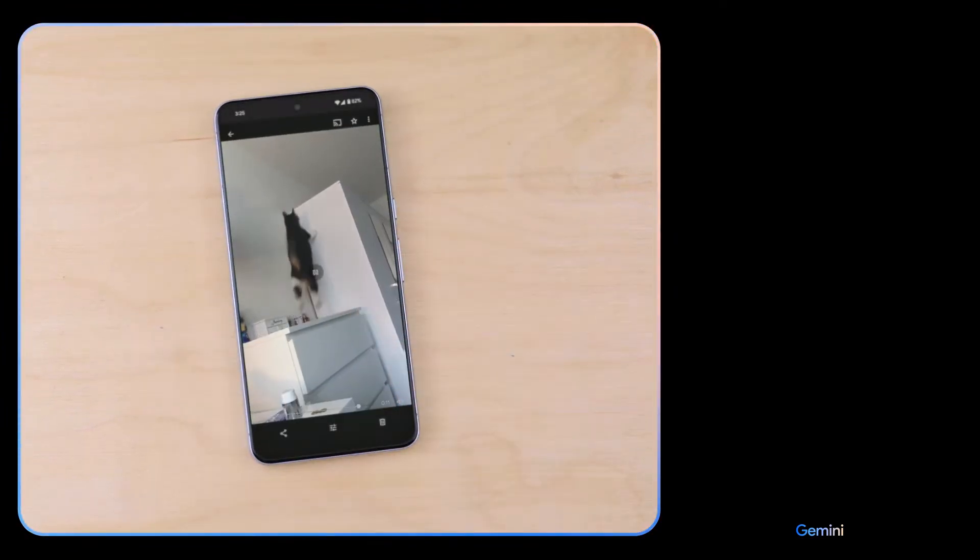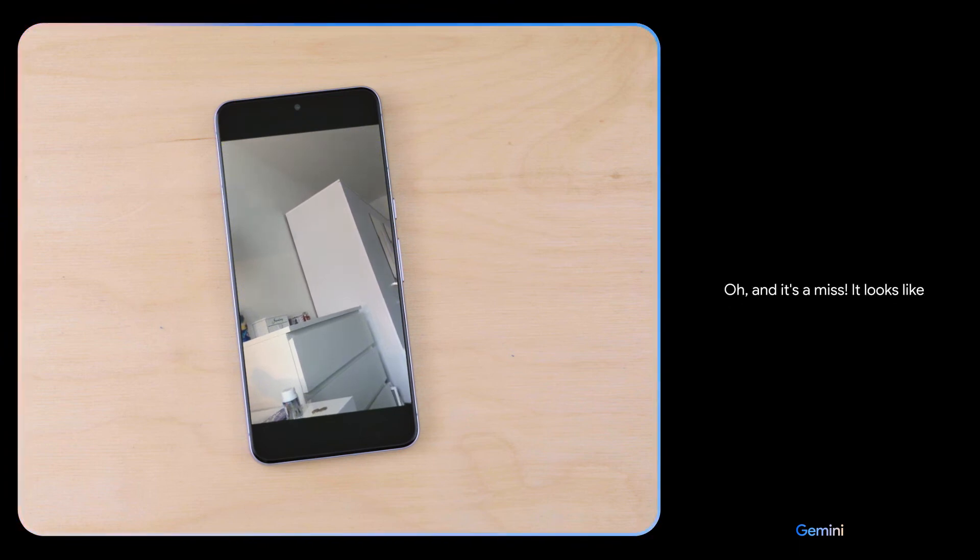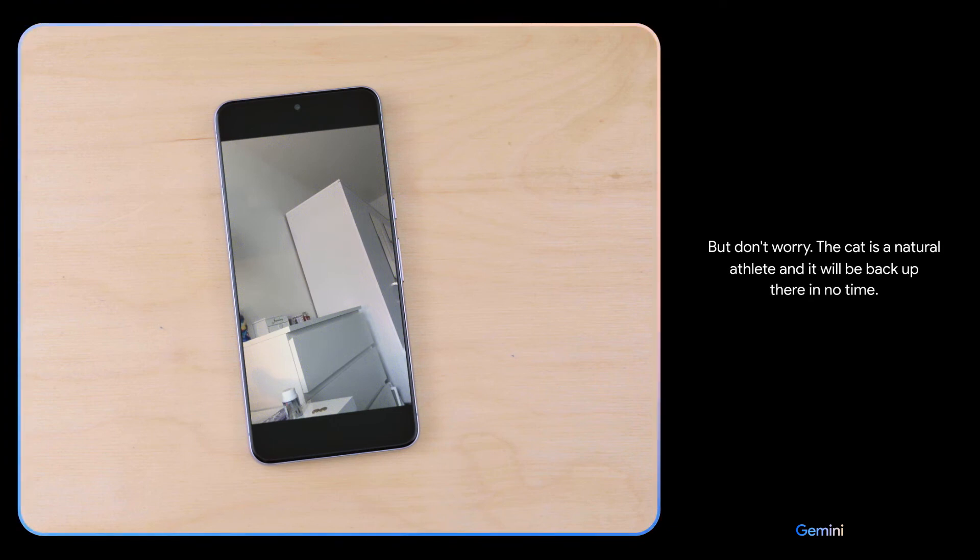What do you think might happen next? The cat is going to jump to the wall and stick the landing. It's going to be a perfect 10. Oh and it's a miss. It looks like it was just a little too far away but don't worry, the cat is a natural athlete and it will be back up there in no time.